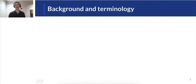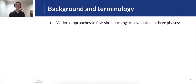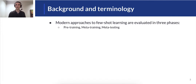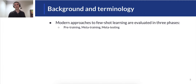Some background on few-shot learning. Modern approaches to few-shot learning are evaluated in three primary phases. Pre-training typically involves using unsupervised learning to train a model, for example a language model like BERT. Meta-training involves optimizing a learning technique to be good at few-shot learning in general, typically using supervised learning. And meta-testing involves evaluating that learning technique on unseen tasks.